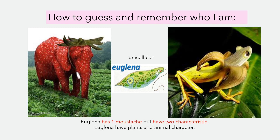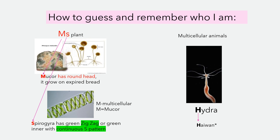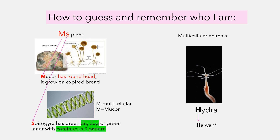Remember that euglena has both plant and animal characteristics. Mucor has a round head. Mucor always grows on expired bread at home. Spirogyra has a green zigzag pattern — you can remember it as a continuous green inner zigzag pattern. Again, hydra is an animal — H stands for 'Haiwan' in Bahasa.